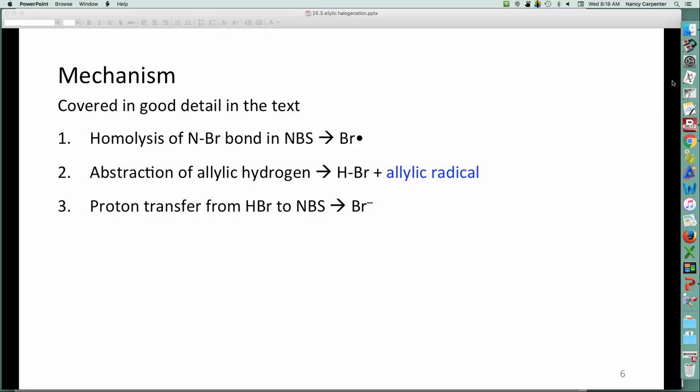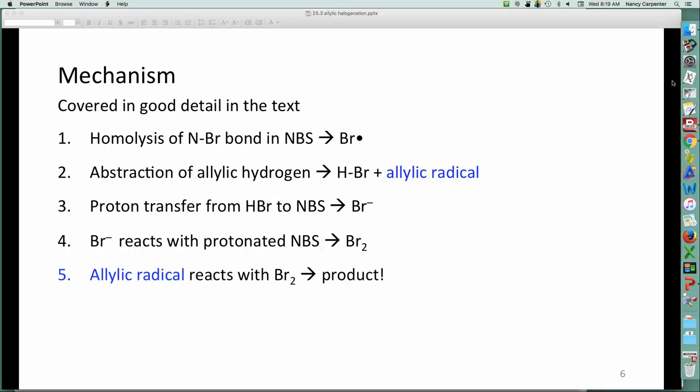Then we have proton transfer from the HBr that's generated. That's going to protonate my N-bromosuccinimide. And when I do that, of course, proton transfer means I generate Br-. What next? Well, then, that Br- is going to react with the protonated N-bromosuccinimide, which we saw on the previous slide. That generates exactly what we wanted, just this little tiny amount of bromine. And then that bromine reacts with the allylic radical to give you your allylic halogenated product.